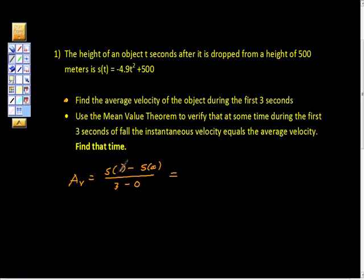If we took S(3), and this would be S(0), we would get 455.9 minus 500, all divided by 3. And that would turn out to be negative 14.7 meters per second. So there's our average velocity on that interval.